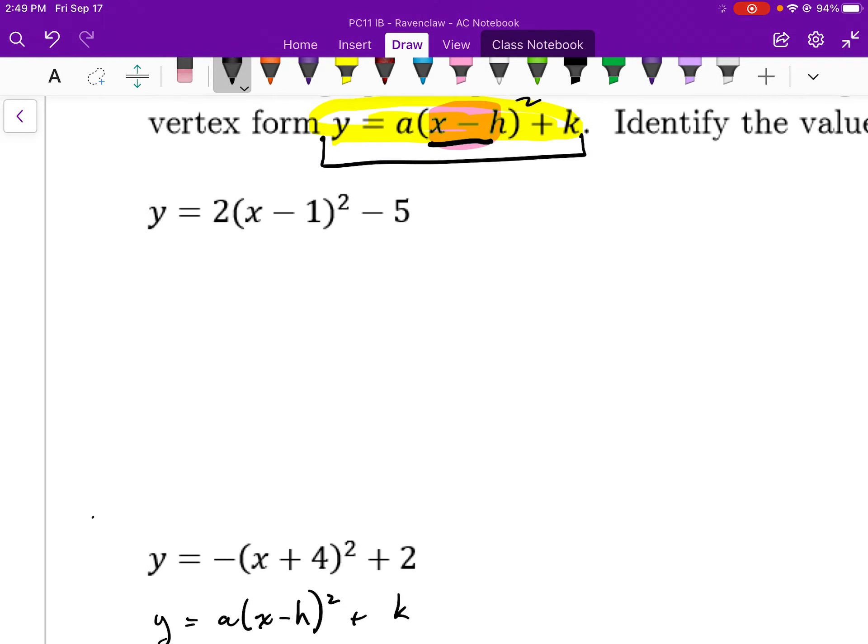So here's my first example: y equals a, open brackets, x minus 1, closed brackets, squared, minus 5. What I have here is a equals h and k. I'm going to pick the low-hanging fruit that requires very little thought. k is going to be equal to negative 5. That will be my y-coordinate of my vertex. I'm after my h value.